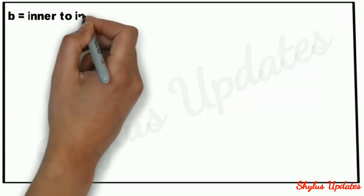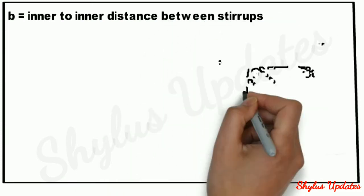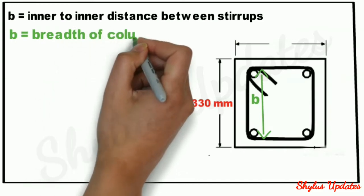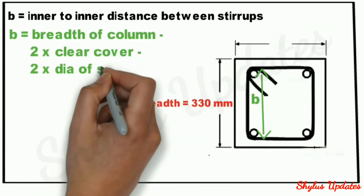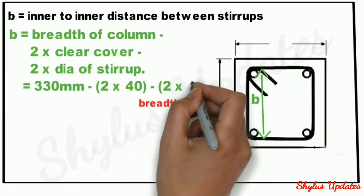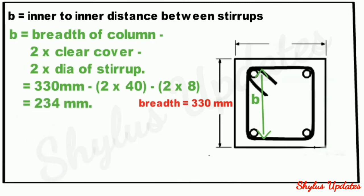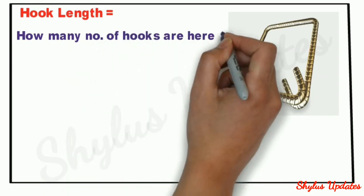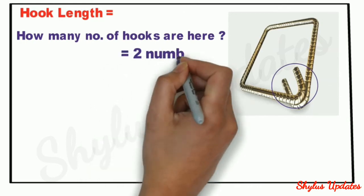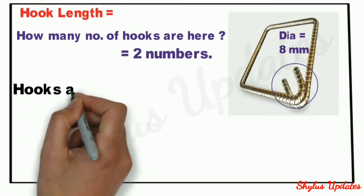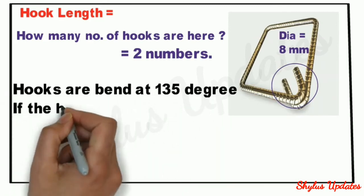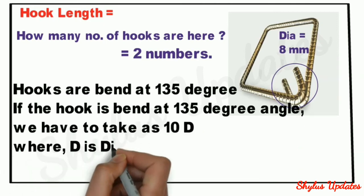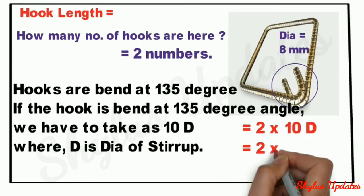Next, we find distance B, also the inner-to-inner distance. Breadth of column is 330mm. B equals breadth of column minus 2 into clear cover minus 2 into diameter of stirrups, giving 234mm. Next, hook length: there are 2 hooks. The diameter of stirrups is 8mm. Hooks are bent at 135 degrees, so we take 10D. Hook length equals 2 into 10 into D. When we solve this, we get 160mm.